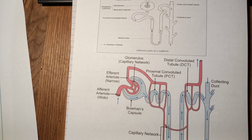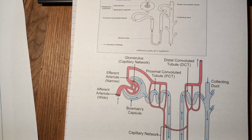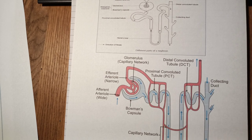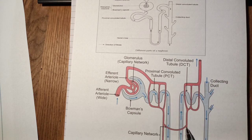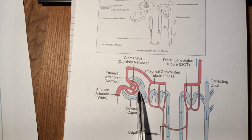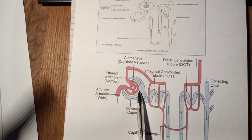At Bowman's capsule, there is a large amount of filtrate generated — about 180 liters in both kidneys every day. But we don't pass that much urine; an average adult passes around two liters of urine. So the rest of the water filtered is reabsorbed. This process is called reabsorption.